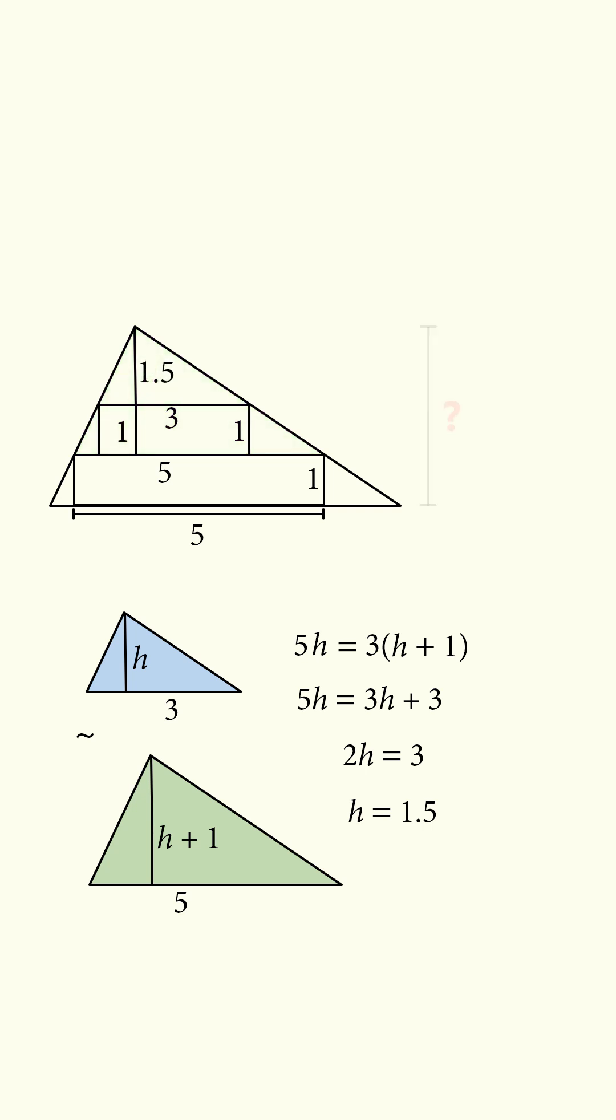Now substituting in, we just label one more height, and that will be equal to 1. So the total height is going to be 1.5 plus 1 plus 1, which equals 3.5.